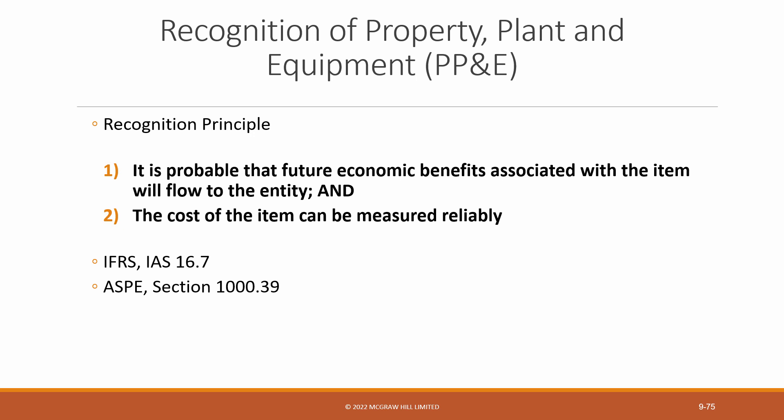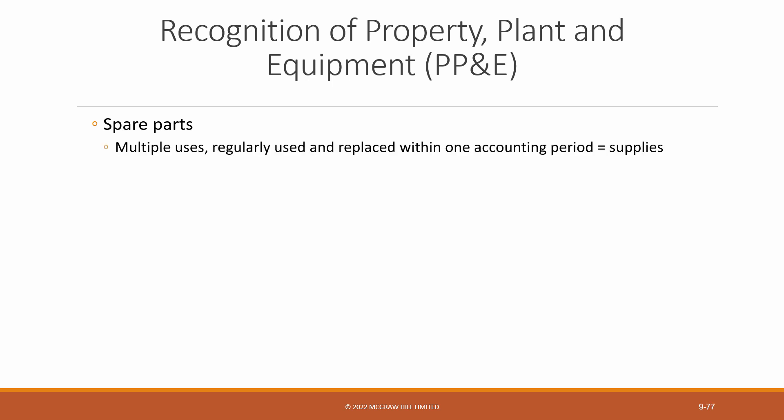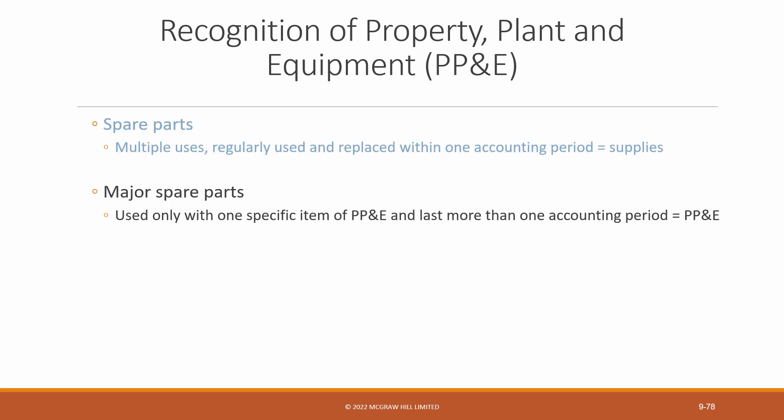Let's get down to a few specifics. What about spare parts? Should they be capitalized as PP&E or as supplies, sometimes called supply inventory? For example, if a manufacturer has equipment with spare parts such as a replacement motor, oil and grease, and replacement fuses — would they be classified as PP&E or as supplies? If the spare parts have multiple uses, are regularly used, and are replaced within one accounting period, then they must be reported as supplies. If it is a major spare part associated with only one item of PP&E and it lasts more than one accounting period — such as a replacement motor — then it is capitalized as PP&E.